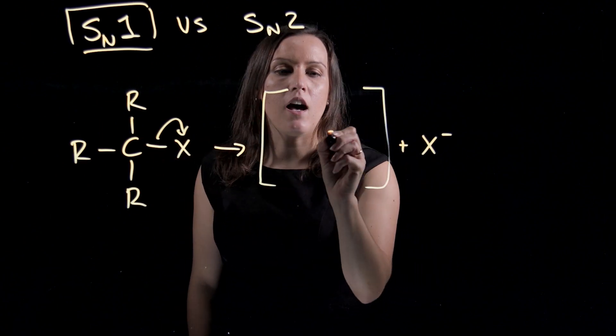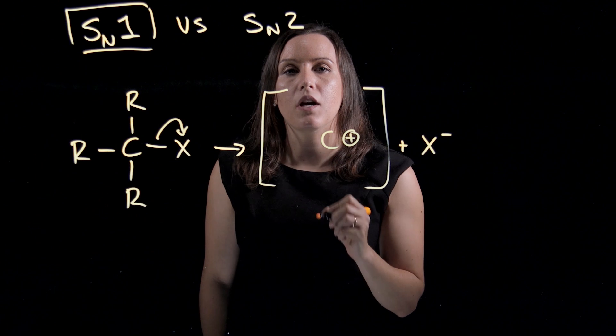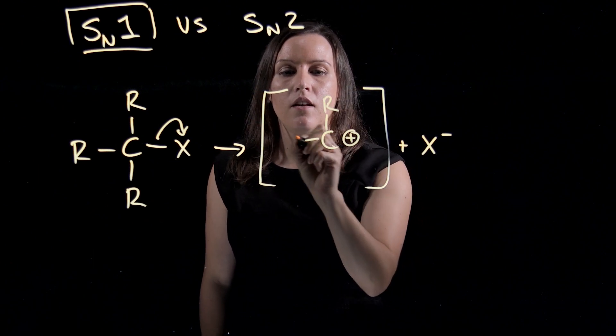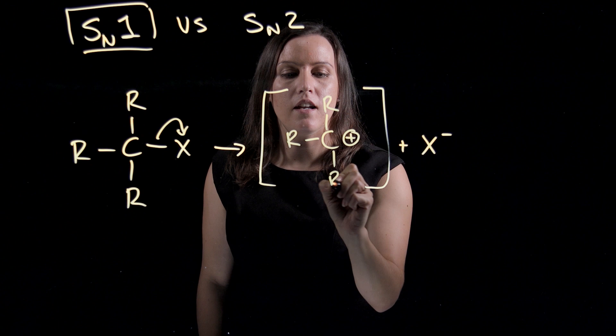And then therefore this will be a carbon that's electron deficient, so we'll pick up a positive charge. Okay, so we get a carbocation intermediate.